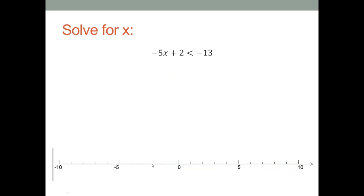Next: negative five x plus two is less than negative thirteen. Let's get the constants together — subtract two from both sides. The twos cancel, and negative thirteen minus two gives us negative fifteen. So we have negative five x is less than negative fifteen.